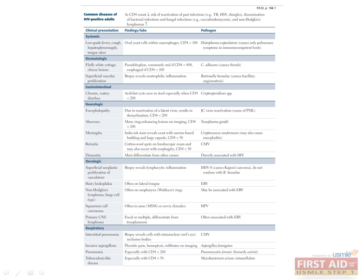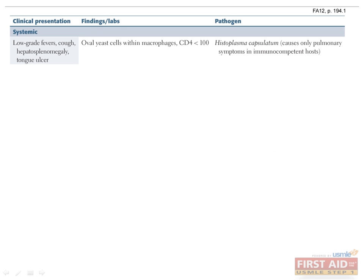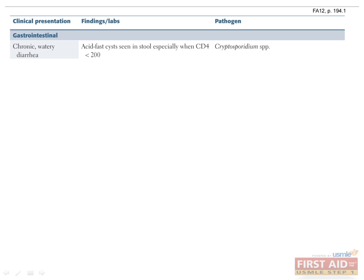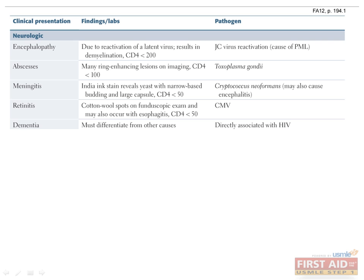The opportunistic infections and diseases of AIDS can affect practically any organ system. Histoplasmosis is a systemic infection seen when CD4 counts dip below 100. Candida infections causing oral thrush appear when CD4 counts are below 400, and esophageal thrush when CD4 counts are below 100. The GI system can become susceptible to cryptosporidium diarrhea when CD4 counts are below 200 — look for severe chronic watery diarrhea. Neurologically, progressive multifocal leukoencephalopathy caused by JC virus can reactivate when CD4 counts are less than 200. Toxoplasmosis can cause ring-enhancing lesions in the brain when CD4 counts are less than 100. Cryptococcal meningitis may develop at very low CD4 counts, less than 50.